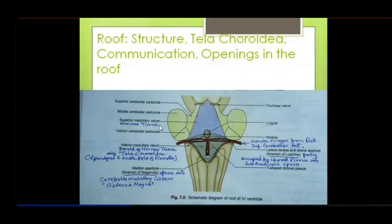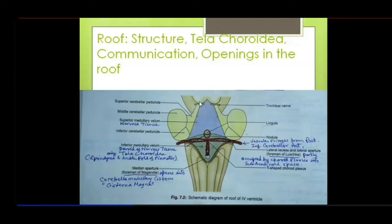The upper blue portion is the superior medullary velum and the lower green portion is the inferior medullary velum. Recall the cerebellum: the median band of fibers joining the two cerebellar hemispheres is the vermis, located on the dorsal side. The vermis was divided into five parts. All of this structure is covered by the cerebellum with its superior, inferior, and medial cerebellar peduncles.